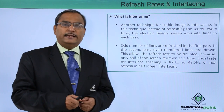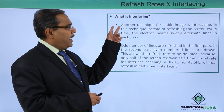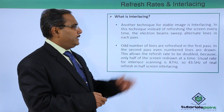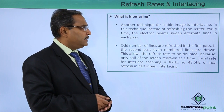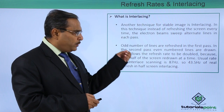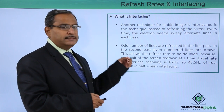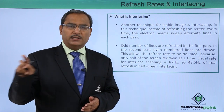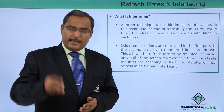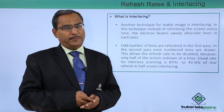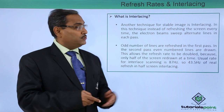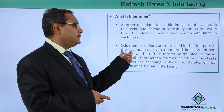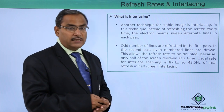Now let us discuss what is interlacing. Another technique for a stable image is interlacing. In this technique, instead of refreshing the entire screen every time, the electron beam sweeps alternate lines in each pass. In one pass, it ignites the lines with even row numbers. In the next pass, it ignites the lines with odd row numbers. So odd-numbered lines are refreshed in the first pass, and even-numbered lines are drawn in the second pass.